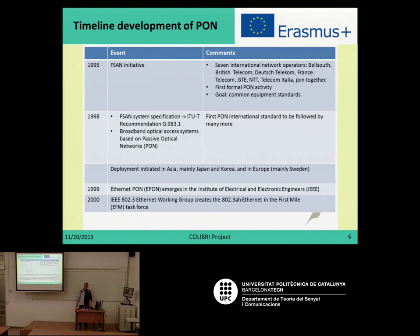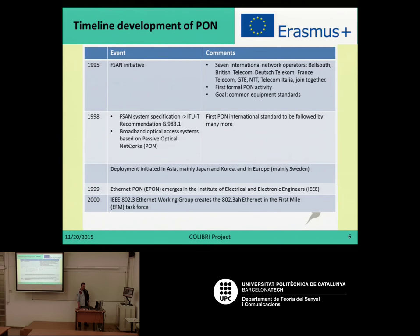With all this, in 1995 a group of seven international network operators decided to join together and start providing a definition for a first standard for this kind of fiber-based optical access. Three years later, in 1998, they published the first international standard called broadband optical access system based on passive optical networks, or B-PON. It was initially deployed in Asia, mainly in Japan and Korea, and in some countries in Europe.